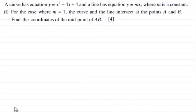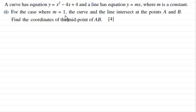Hi there. For this question we're told that a curve has equation y equals x squared minus 4x plus 4, and a line has equation y equals mx where m is a constant. For the case where m equals 1, the curve and the line intersect at points A and B, and we've got to find the coordinates of the midpoint of A and B for four marks.